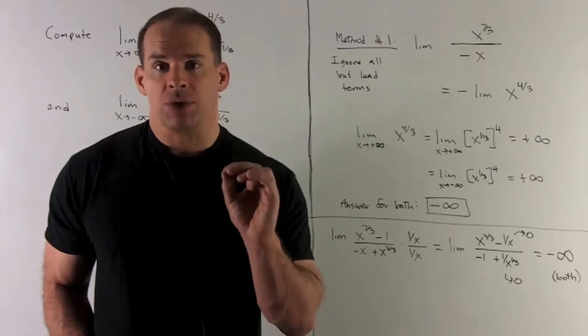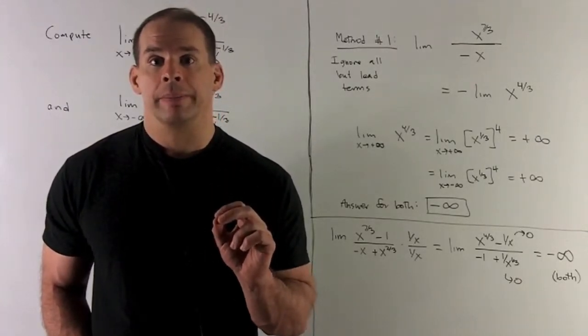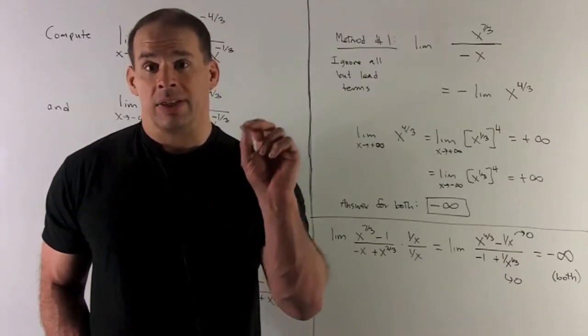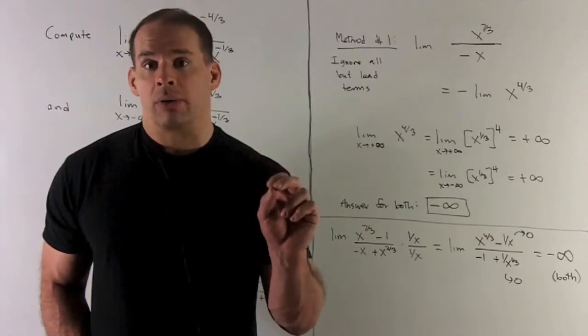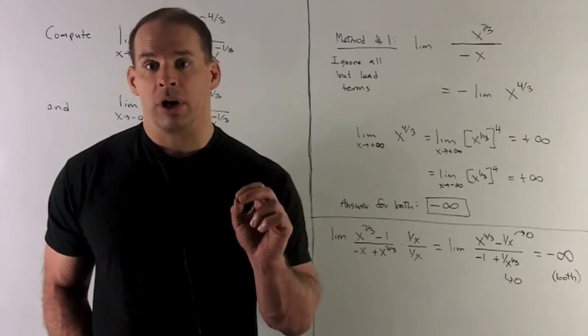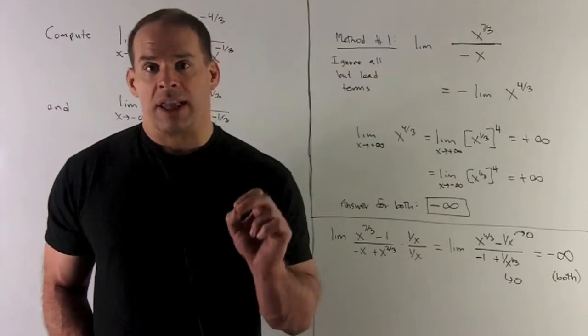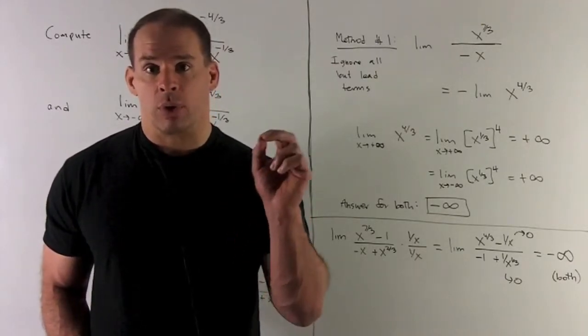From here, there are two directions we can go in. First, the quick and dirty way. Here, I'm going to take the lead terms, throw away all the rest of the terms. That leaves me with x to the 7 thirds over minus x. That's going to collapse to minus x to the 4 thirds.